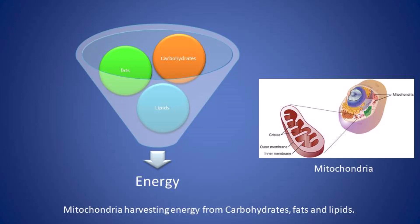Mitochondria is also known as the energy house of the cell. It is not just foodstuff that is sufficient for energy production — oxygen is also necessary. Foodstuffs and oxygen are transported to the cell via the circulatory system, and this is coordinated by the control system of the body. Each life process contributes in its own way to energy production, and the functioning of all life processes also requires energy.